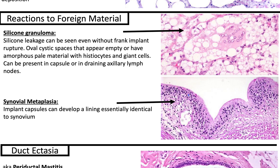It's fascinating what our body does in terms of adaptations. If you have a breast implant, sometimes your body will make a capsule basically lining over the implant, and you can have synovial metaplasia that is essentially identical to synovium.